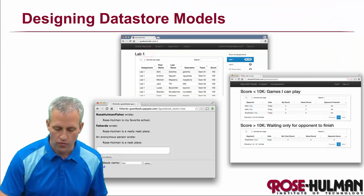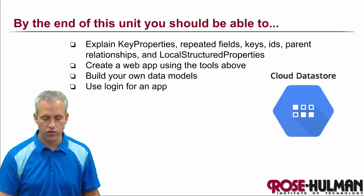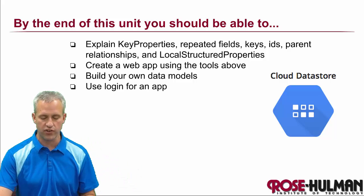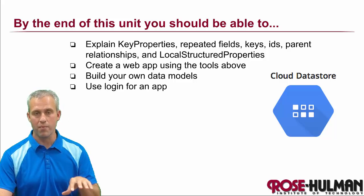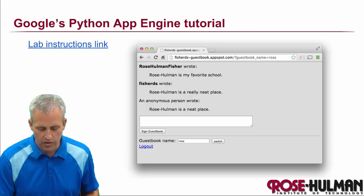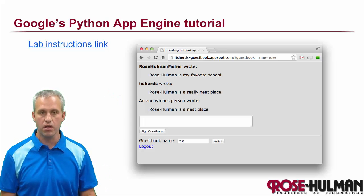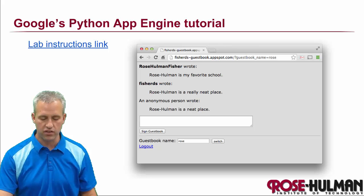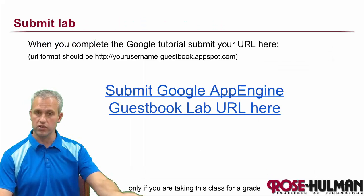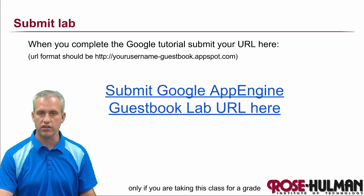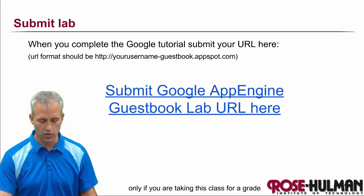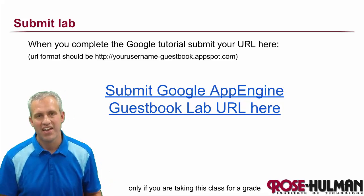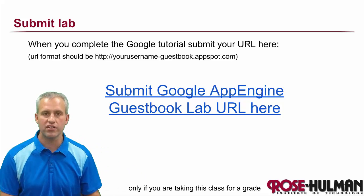That's the overview of what's going on in this unit. You should be able to explain things like key properties, repeated fields, and you should really understand keys and IDs very well, along with various properties, so you can make web apps using these tools. To start, go ahead and find the lab link in the slides. Once you're finished, if you're taking this class for a grade, submit your URL. This lab walks you through an introduction to App Engine as provided by Google. Good luck knocking out that lab — it should take you a while. After that, pick up with the next video. See you then!